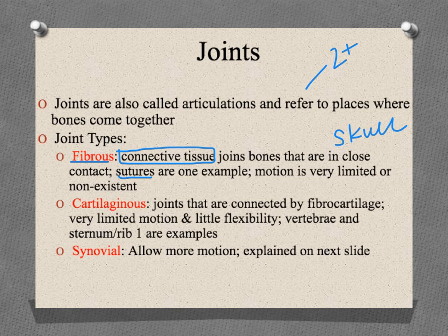The next type is cartilaginous joints — held together by cartilage, specifically fibrocartilage. These are also fairly rigid joints. Examples include the joints between the vertebrae, which have very limited motion — you can bend forward, side to side, and somewhat backward, but not much else — and the joint between the sternum and the ribs.